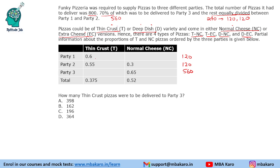We multiply the proportions to get actual numbers. For party 1, 0.6 of thin crust means 72 pizzas are thin crust. For party 2, 0.55 of 120 gives 66. For the total of 800, multiplying by 0.375 gives 300. Computing 560 × 0.65: we can use the trick of halving and doubling — 28 × 13 — to get 364.